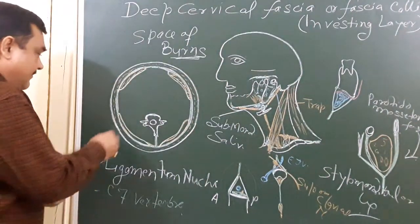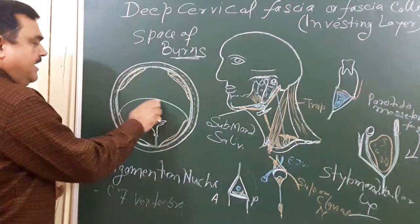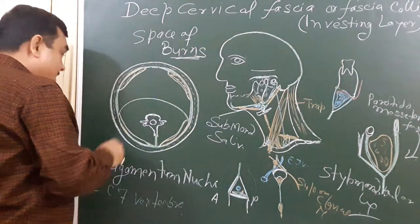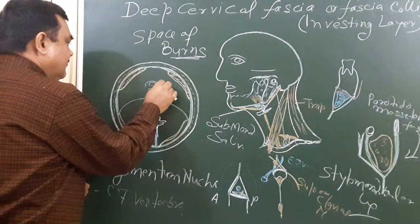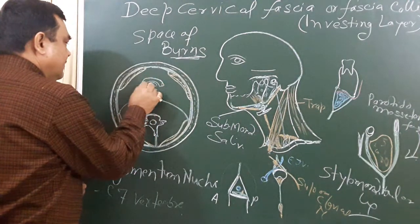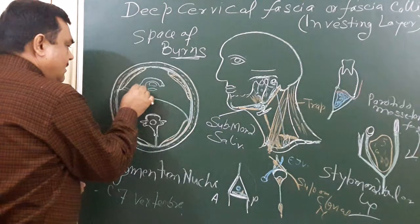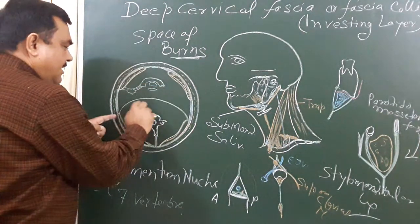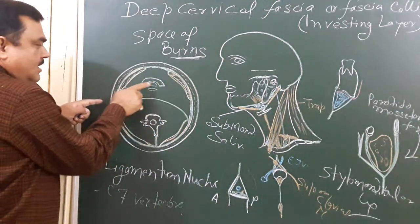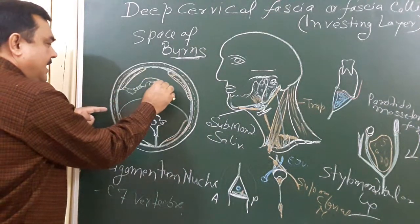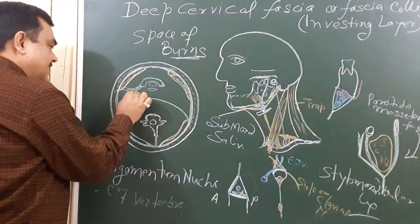It also gives extensions — forming the pretracheal fascia. It also gives extension to form the prevertebral fascia. It also forms the carotid sheath, which we will discuss later in detail.